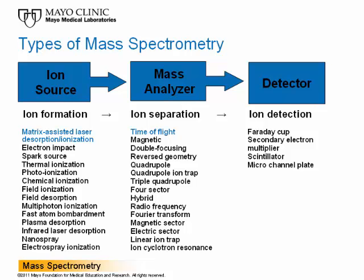Matrix-assisted laser desorption ionization is a soft ionization technique, allowing molecules to remain relatively intact during ionization. Proteins can be measured as little protein fragmentation occurs. Following ionization, the ions are separated, enabling measurement of mass. Using the approach covered in today's presentation, ions are separated by time of flight in a flight tube.